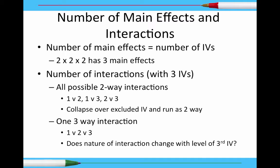That's calculating the number of people we would need for a study. How about the number of main effects and interactions? The number of main effects equals the number of independent variables in our study. Here we have three independent variables — a two-by-two-by-two — so with three IVs we're going to have three main effects to check. They may or may not be significant, but you're going to have one main effect per independent variable.